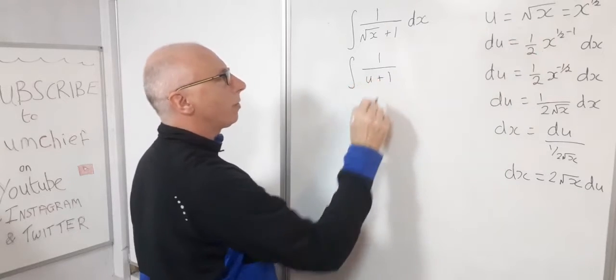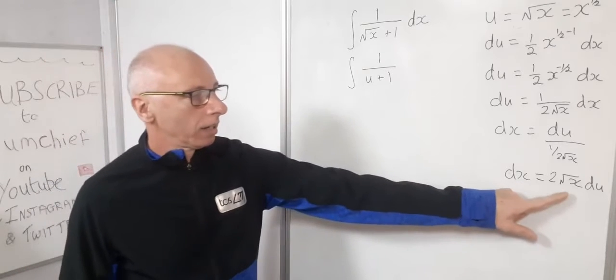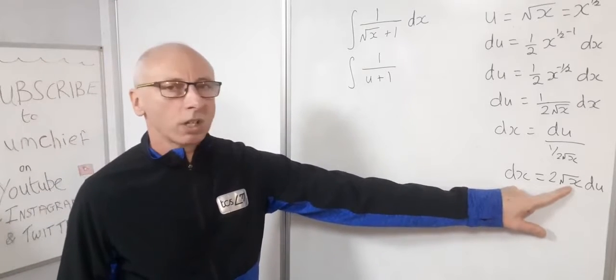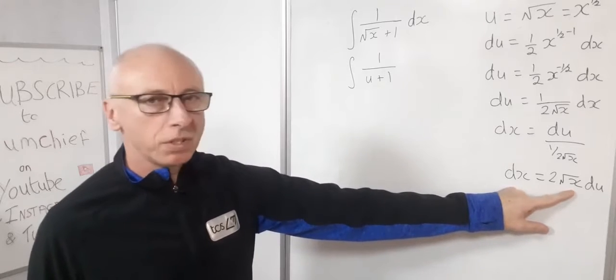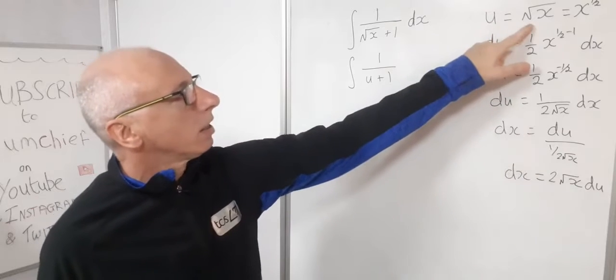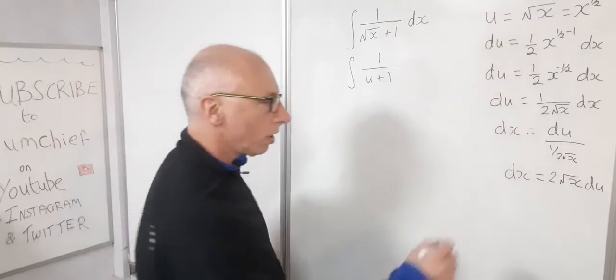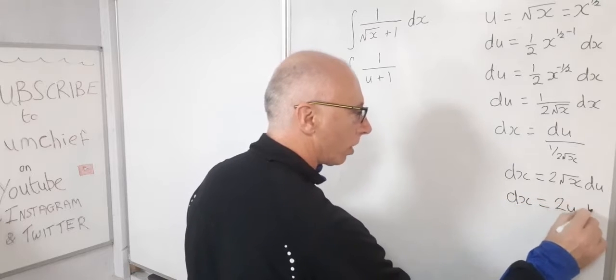So that's u plus one. And now we've got to plug in our dx. Now here, we could go straight into our u world here with our derivative of dx. We've got two times the root of x. The root of x is the same as u.